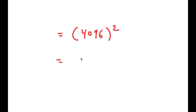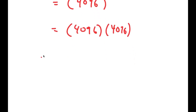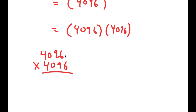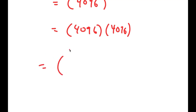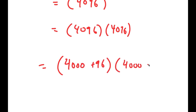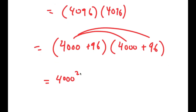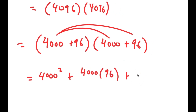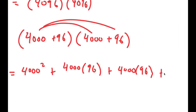Now, 4096 squared is the same thing as 4096 times 4096. What most people would do is multiply this using the conventional method, but that takes too long and it's easy to make an error. So instead, I'm going to rewrite this as (4000 plus 96) times (4000 plus 96) and use the distributive property. So I get 4000 squared plus 4000 times 96 plus 4000 times 96 plus 96 squared.